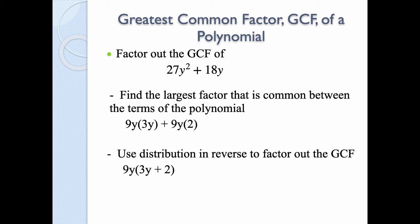If you distribute what we have here, you should get back to what you started with, so you can always double-check. We're looking for the largest number and the smallest exponent for common variables that we can pull out of all the terms — that is our GCF.